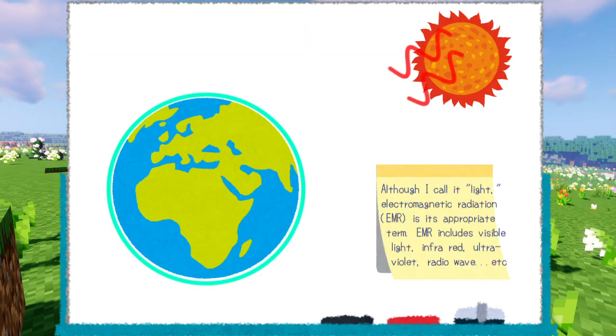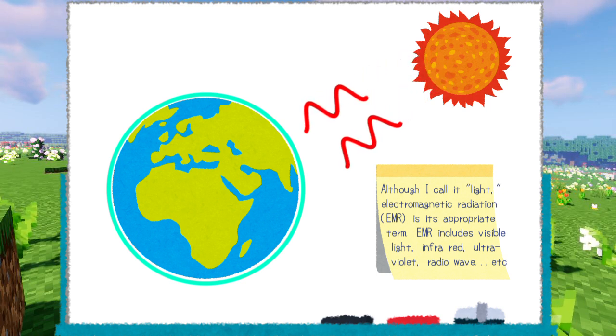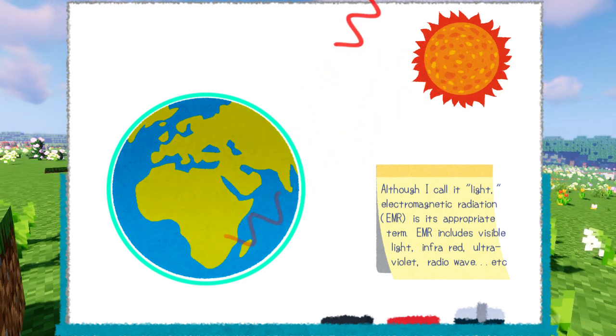First, when sunlight hits the Earth's atmosphere, water, or land, it is either reflected or absorbed as heat.